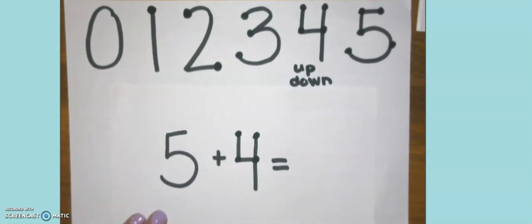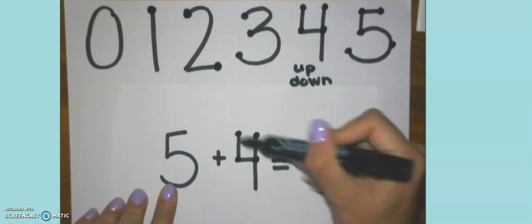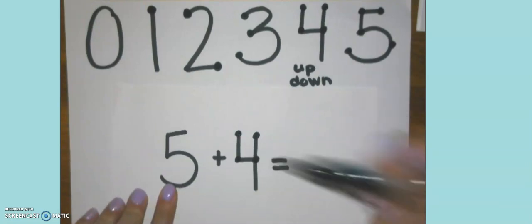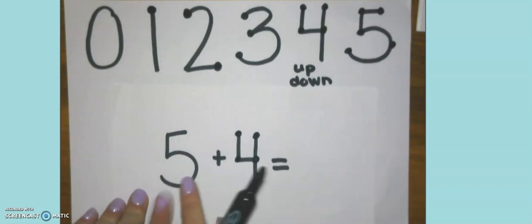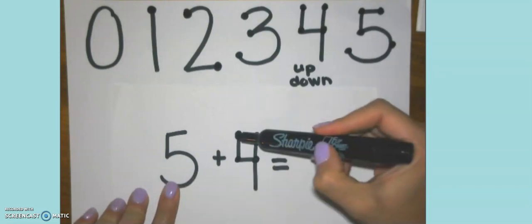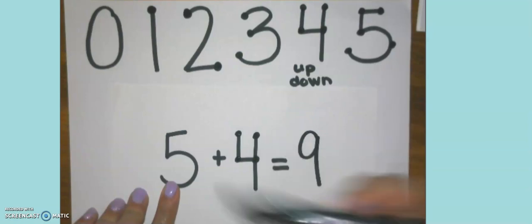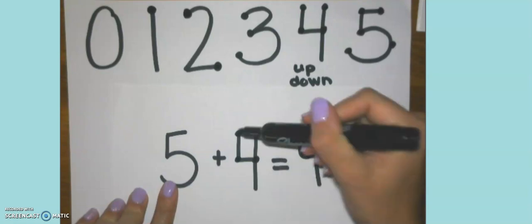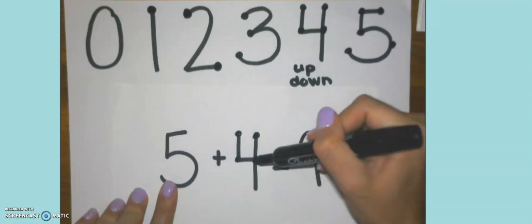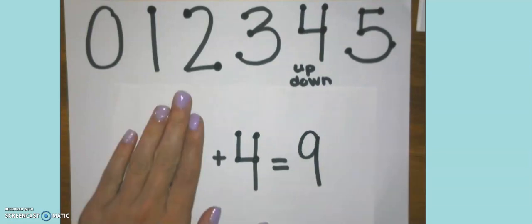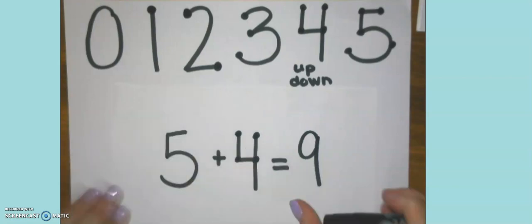Now, in order to add this, we're going to say the big number, five, then keep adding on with the small number. Let me show you. Five, six, seven, eight, nine. I tapped my pencil on the four touch points, and since we're adding, I counted up. Five, six, seven, eight, nine. That's why we don't need to necessarily do the big number, because we can just say it and count on.